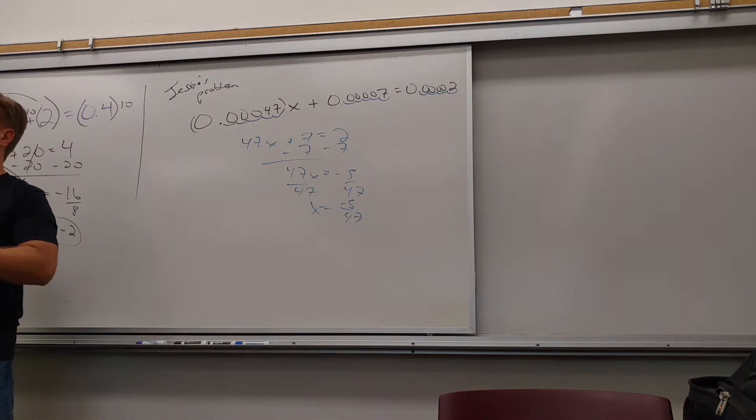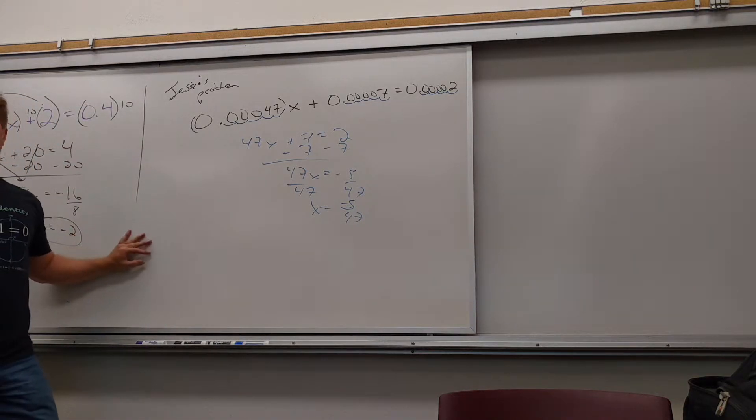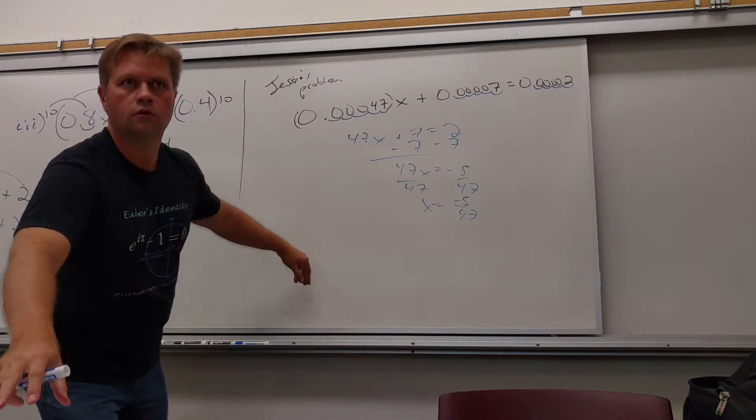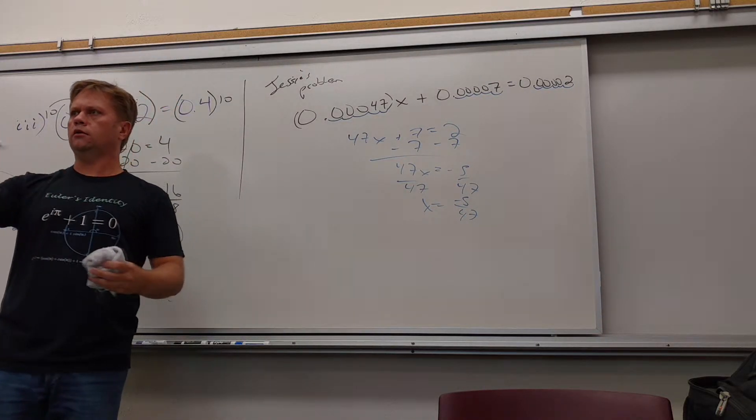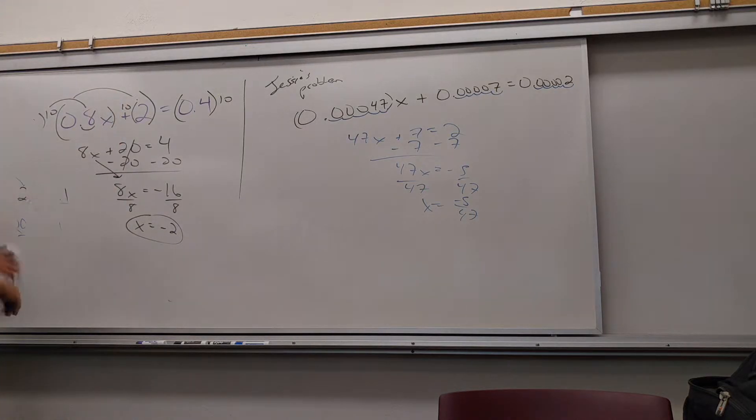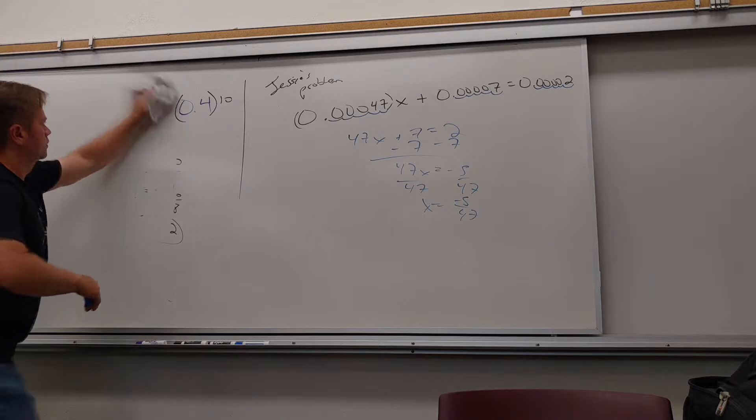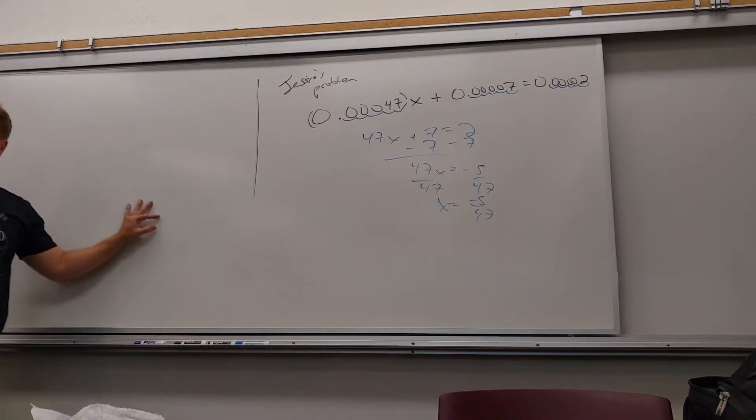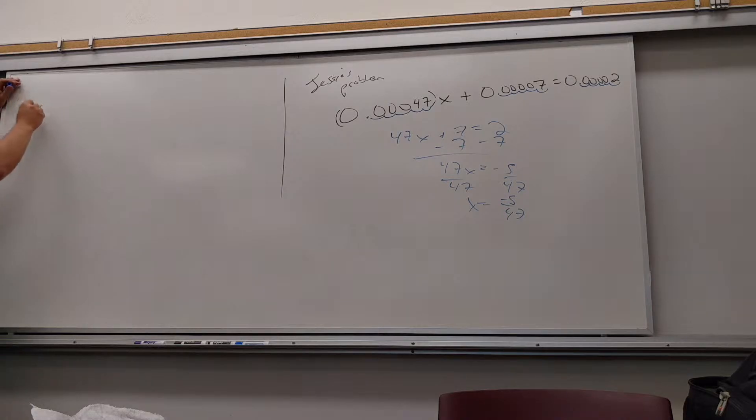Subtract 7. 47x equals negative 5. Divide by 47. x is negative 5 over 47. Yes ma'am. Just normally solve for x. Sure, sure. That's an extreme example, but... All right. So you guys try these. Try these.